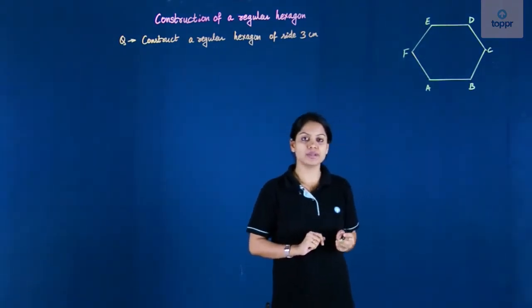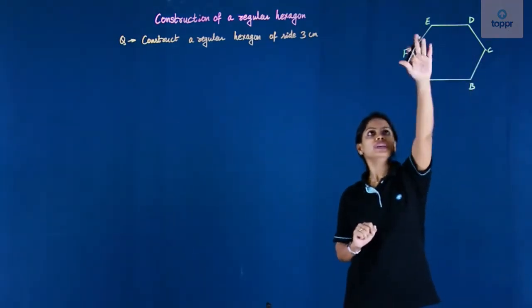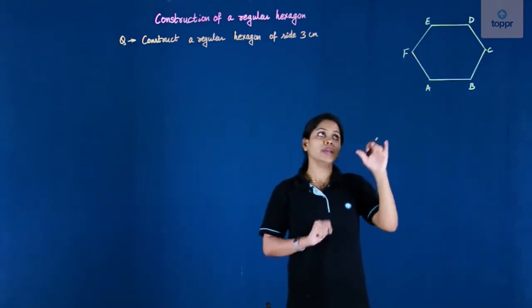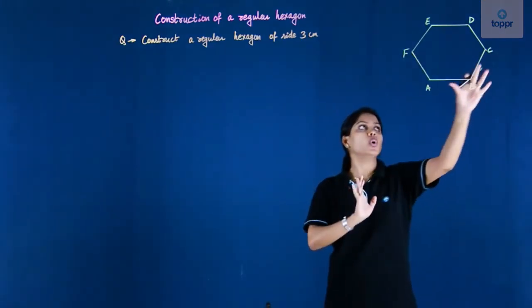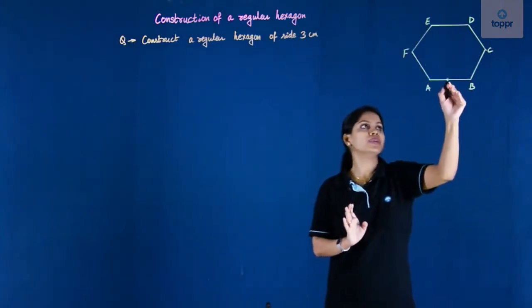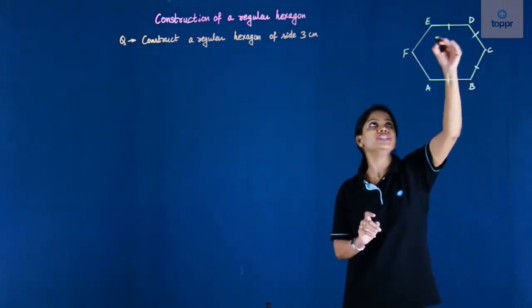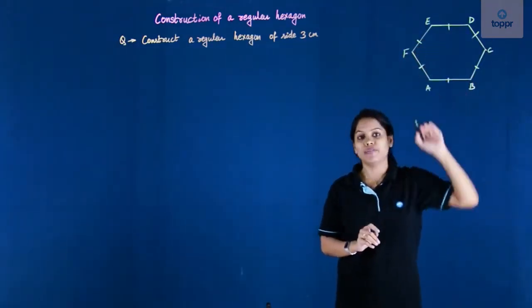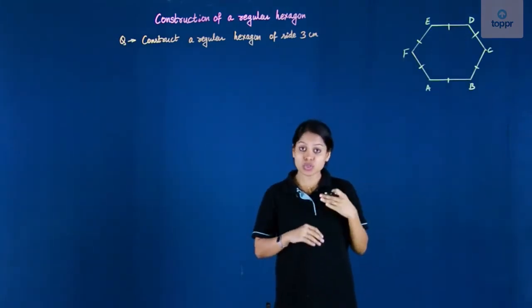So in this particular hexagon here, A, B, C, D, E, F is its name, and if it's a regular hexagon that means it has all the sides equal to each other—that means AB, BC, CD, DE, EF, and FA, all of them are equal to each other and so are the angles.